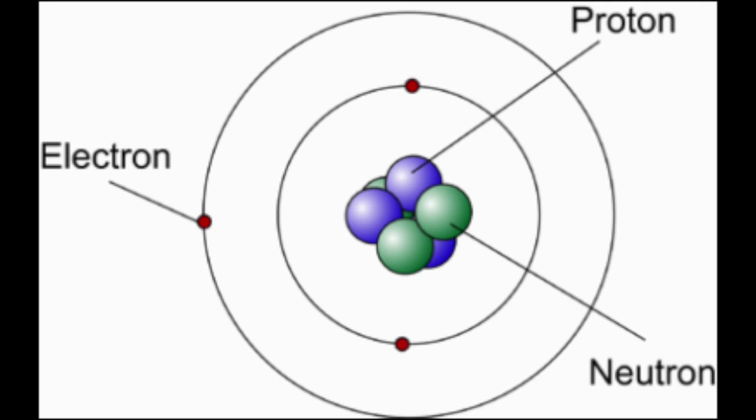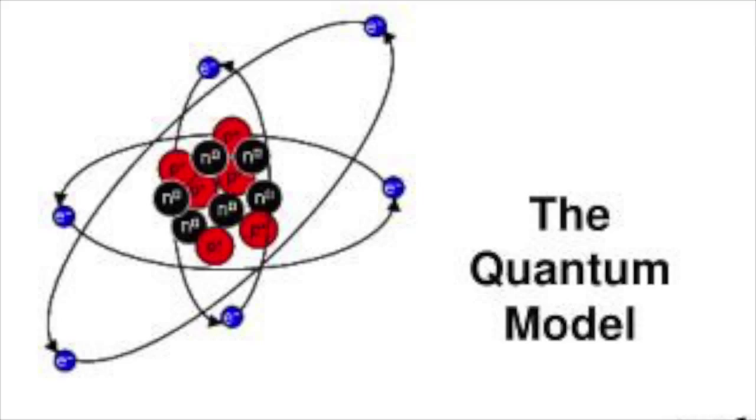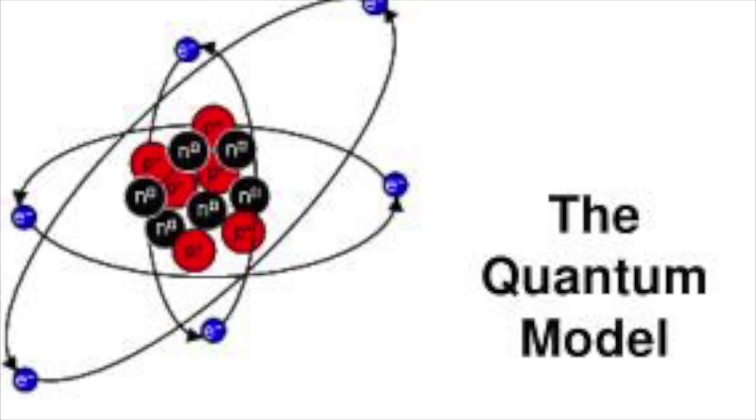Finally, today, the work of all these men came together to create the modern quantum mechanical model of the atom. Bohr's model was what started to bring quantum mechanics into the atomic structure, giving the idea of energy levels within the atom. It then took the work of both Schrödinger and Heisenberg to come up with better ways to describe those energy levels, giving light to the actual structure of the atom.